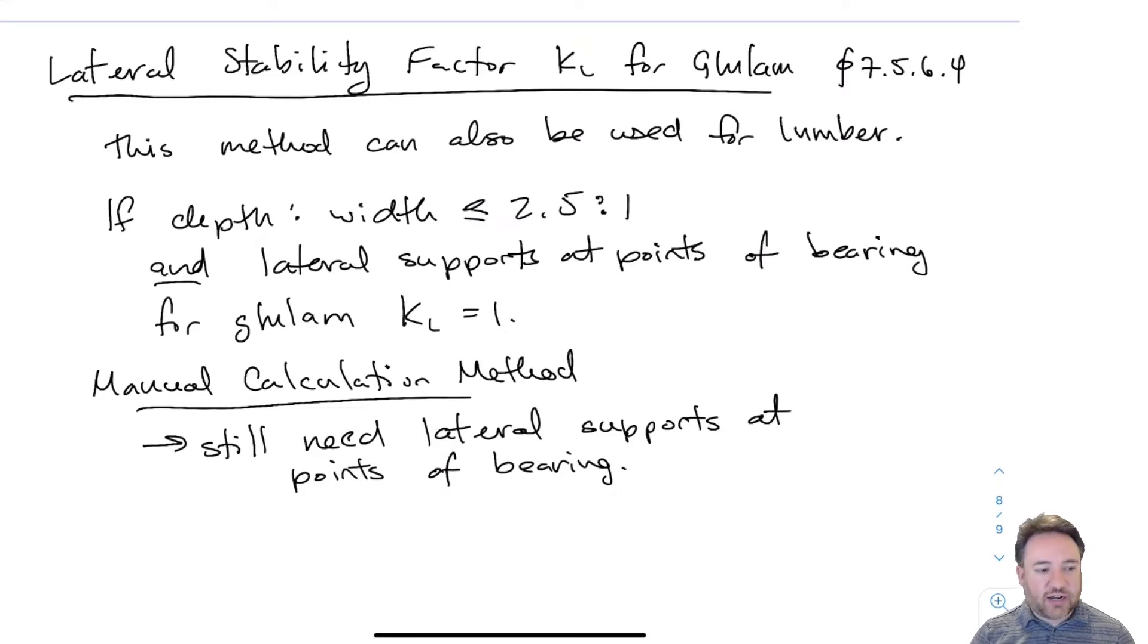That is the only category where it's automatic. For every other beam, like this one where the depth to width ratio is greater than 2.5 to 1, we'll have to calculate KL using the manual method. Even when calculating KL, we still need lateral supports at points of bearing to prevent lateral movement and rotation.